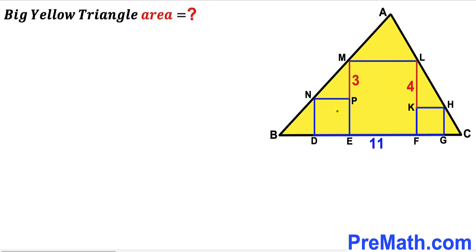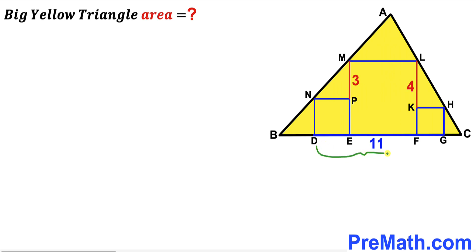Welcome to pre-math. In this video we have three squares of different dimensions fully inscribed in a big triangle ABC. This vertical segment MP is 3 units, segment KL is 4 units, and horizontal segment DG is 11 units. Our task is to calculate the area of this big yellow triangle ABC.